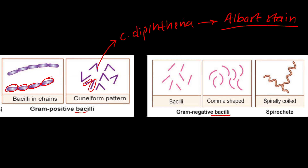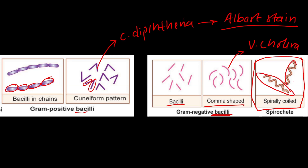For gram negative bacilli: if comma-shaped, the answer is Vibrio cholerae. If spirally coiled gram negative bacilli are seen, those are spirochetes — examples include Borrelia and Leptospira.